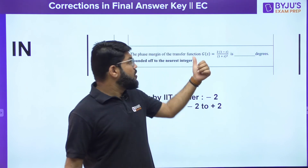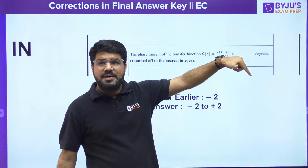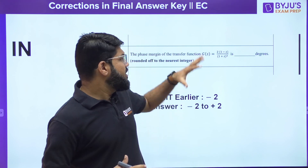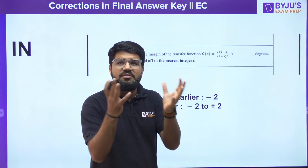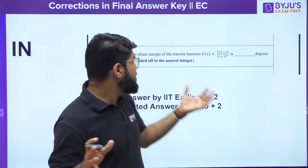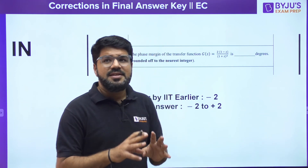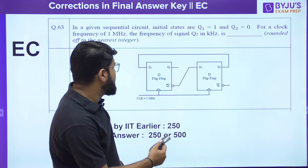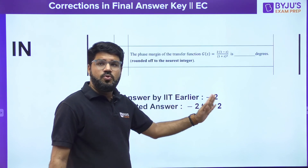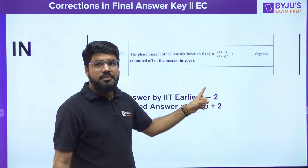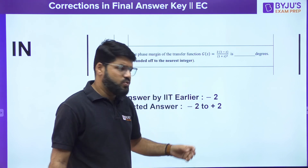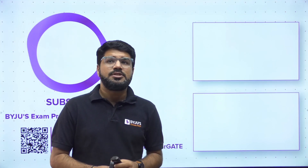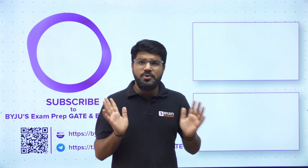Now one question from Instrumentation Engineering — we provided MATLAB proof earlier. Although this is a non-minimum phase system and we cannot directly apply the phase margin formula, as clearly stated in Benjamin Guo, we can trust MATLAB. Even drawing the polar plot of this system, the complete polar plot shows that the phase margin has to be zero degrees. The answer key was earlier showing minus two, but there was no logic from the polar plot supporting minus two. It has now been corrected — if you marked zero, MATLAB also gives 0.00-something, very close to zero, and the range minus two to plus two covers that answer.